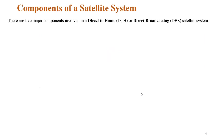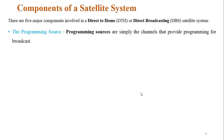The components of the satellite system — there are basically five components. The first one is the programming source. In the programming source, the channels are just providing the programming for the broadcast, meaning whatever channels we see on our television are providing programming for broadcasting.